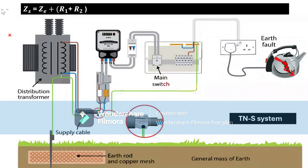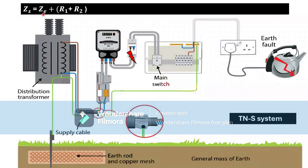If we add Ze and R1 plus R2 together, we get Zs — the total earth fault loop impedance. It includes the internal path, which is R1 plus R2, and the external path, which is Ze. That completes the explanation of TN-S, or Terra Neutral Separate systems.